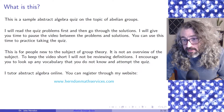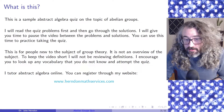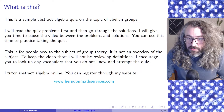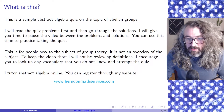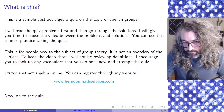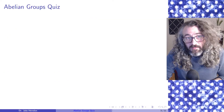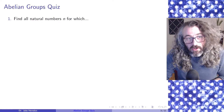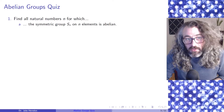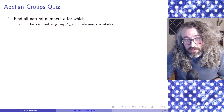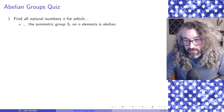I also tutor abstract algebra online, so if you're looking for an abstract algebra tutor, you can register through my website: HerndonMathServices.com. And now on to the quiz. Problem 1, Part A: Find all natural numbers n for which the symmetric group on n elements is abelian.